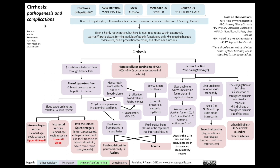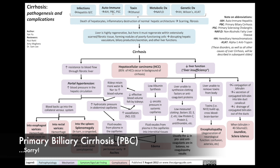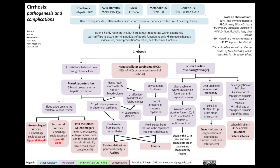Cirrhosis is a condition specific to the liver — that's why we don't say liver cirrhosis, we just say cirrhosis. Cirrhosis is an end-stage scarring of the liver caused by many different pathologies. These include infections that specifically target the liver, such as hepatitis B and C, and autoimmune causes such as autoimmune hepatitis, primary biliary cholangitis (PBC), or primary sclerosing cholangitis (PSC).